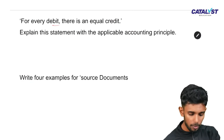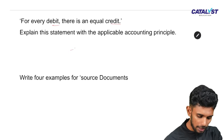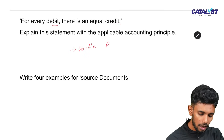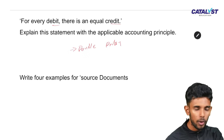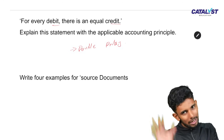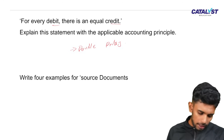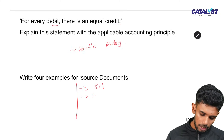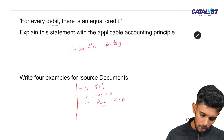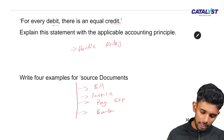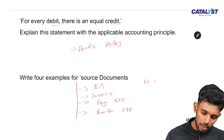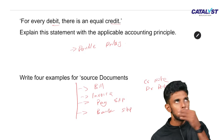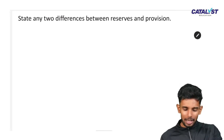For every debit, there is a corresponding credit — that is the double entry concept, also called the duality concept. For example, if you sell goods worth 100, there is a debit of 100 and a credit of 100. Examples of source documents include: bill, invoice, pay slip, bank slip, credit note, and debit note.